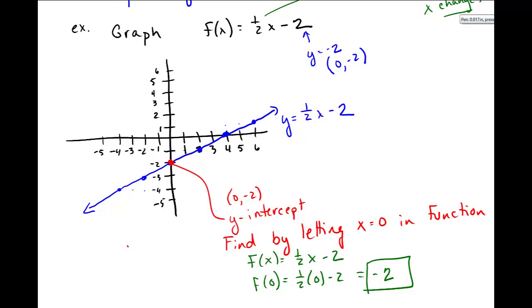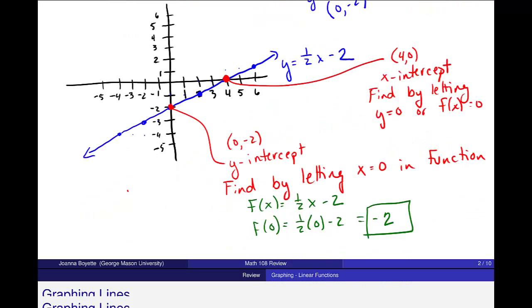There's another point, one more point: the x-intercept, right here at the point 4, 0 is the x-intercept. The x-intercept is where the graph crosses the x-axis. The equation of the x-axis is the line y equals 0. So I find by letting y equal to 0 or f(x) equal to 0. Let me go down and do that algebra.